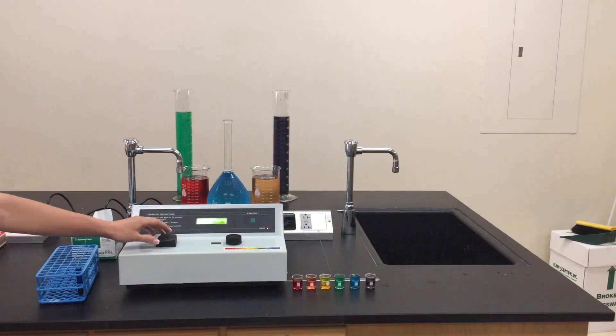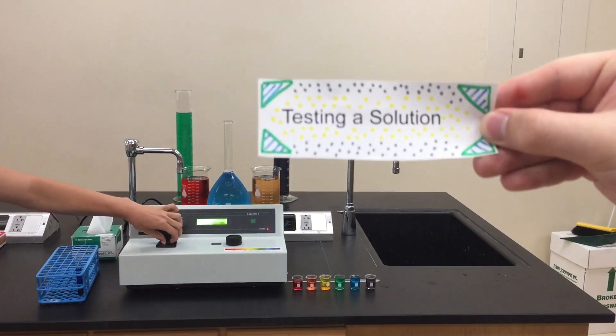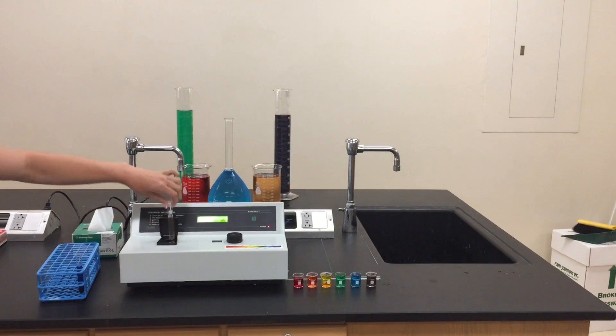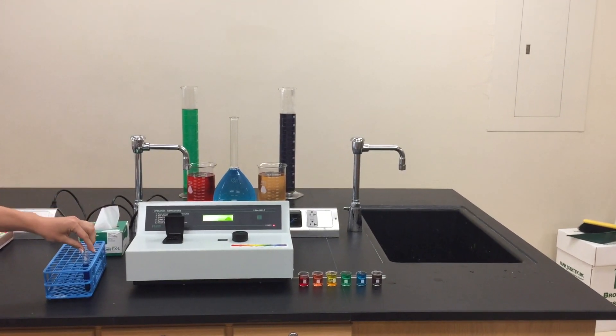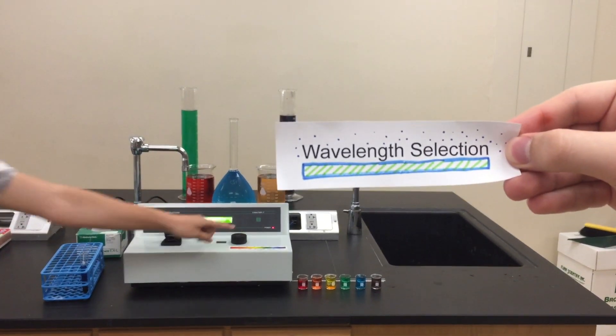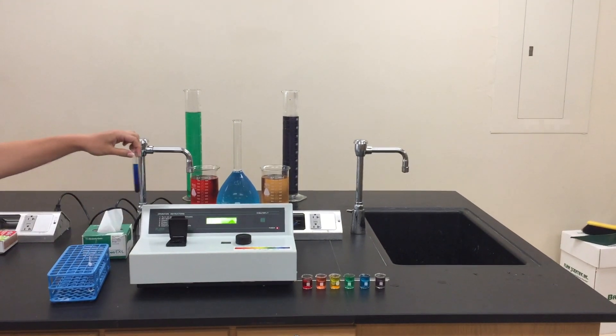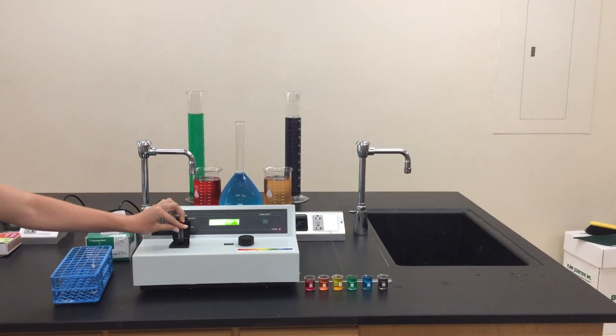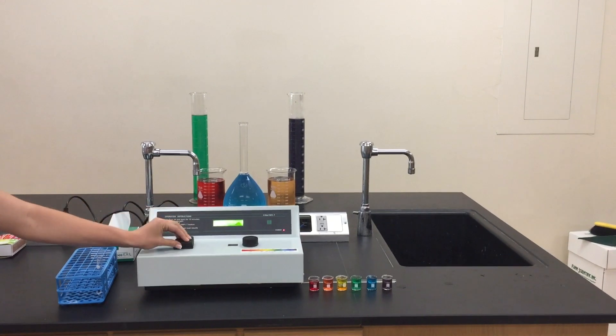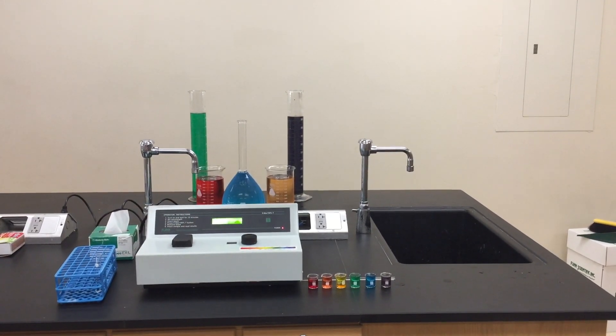Now the machine is set to test your solution. Make sure the wavelength knob is set to the appropriate wavelength for your experiment. Place the cuvette with your solution in the sample holder, then watch the display for your measurements.